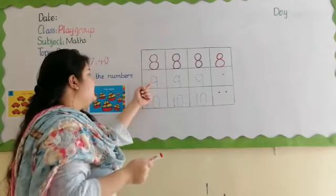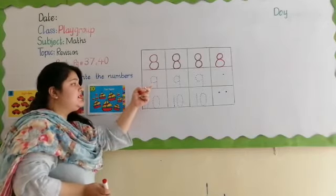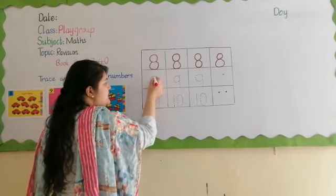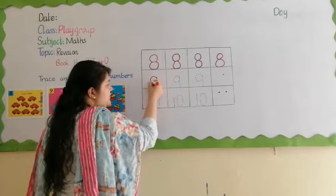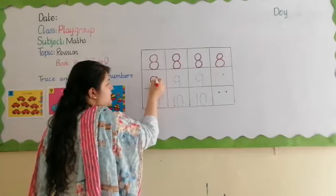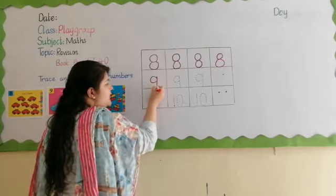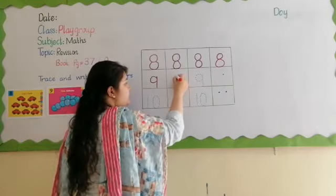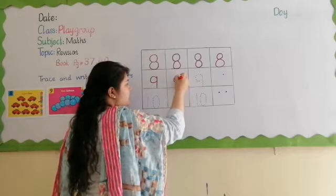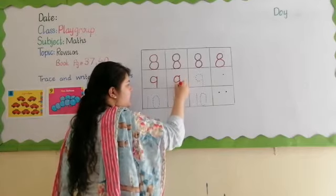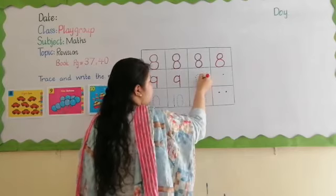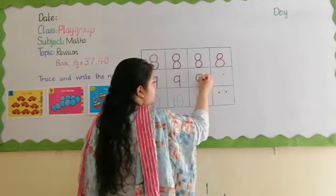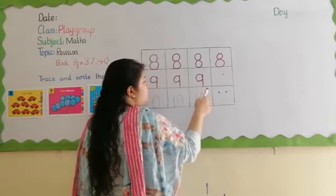Next is 9. Which number is this? 9. Which number is this? Nine. Let's start. Make a curve C, go up, come down and down — nine. Again: make a curve C, go up, come down and down. Very good. Again write it: make a curve C, go up, come down and down — nine.